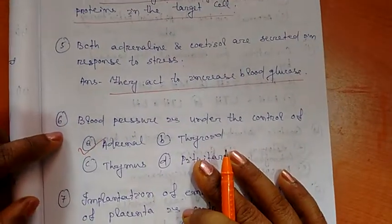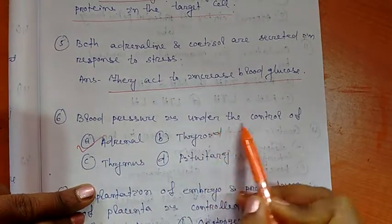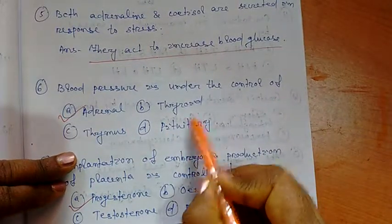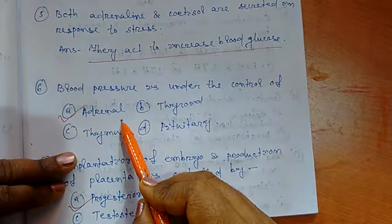Number 6 question. Blood pressure is under the control of adrenal, thyroid, thymus, or pituitary. Right option I have given is adrenal.